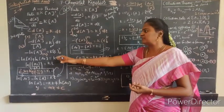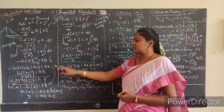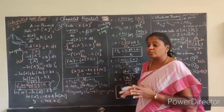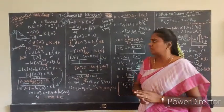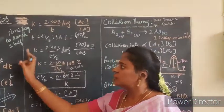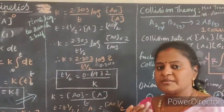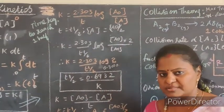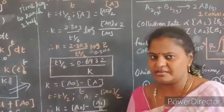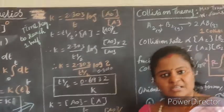We have seen the examples and the rate constants for first order and zero order reactions. Let us proceed now to the half-life period. Before going into the derivation for half-life, we must know what we mean by half-life of the reaction. Half-life is nothing but the time required for any reactant to reduce to half of its initial amount. For example, if we take 100 moles at the beginning, it will be reduced to 50 moles - that is the half-life period.